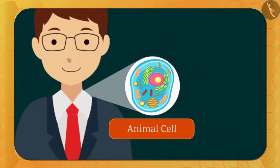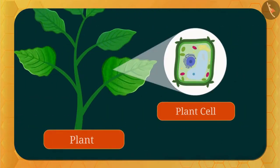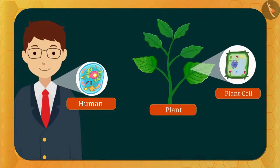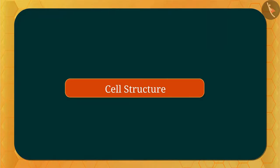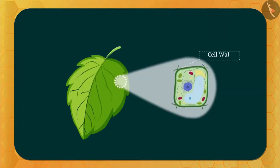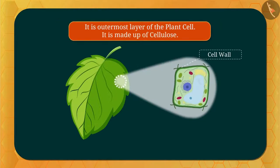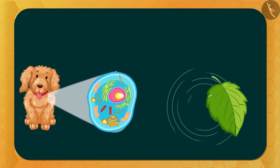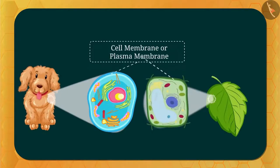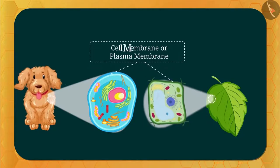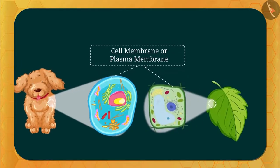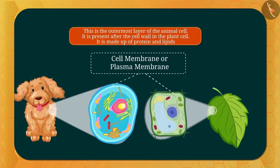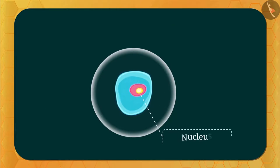Now let us see how these cells look. Here is a human and here is a plant. After zooming in, the cell you are looking at is an animal cell, and this is a plant cell. Let's look at their structure. The outermost layer of the plant cell is called the cell wall. This cell wall is found only in plant cells — it is not found in animal cells. After this, you can see a layer in the animal cell called the cell membrane or plasma membrane. This layer is found in both plant and animal cells.